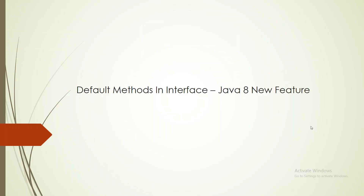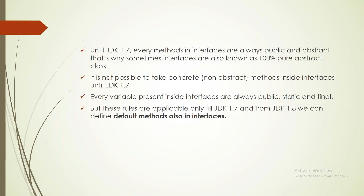Hey guys, this is Shreyanj. Today in this video I am going to talk about one of the exciting features of Java 8, that is default methods in interfaces. So until JDK 1.7, all the methods of interfaces are by default public and abstract, even if we are not writing public and abstract explicitly. That's why sometimes interfaces are also known as 100% pure abstract class, and it is not possible to have concrete methods inside interfaces until JDK 1.7.